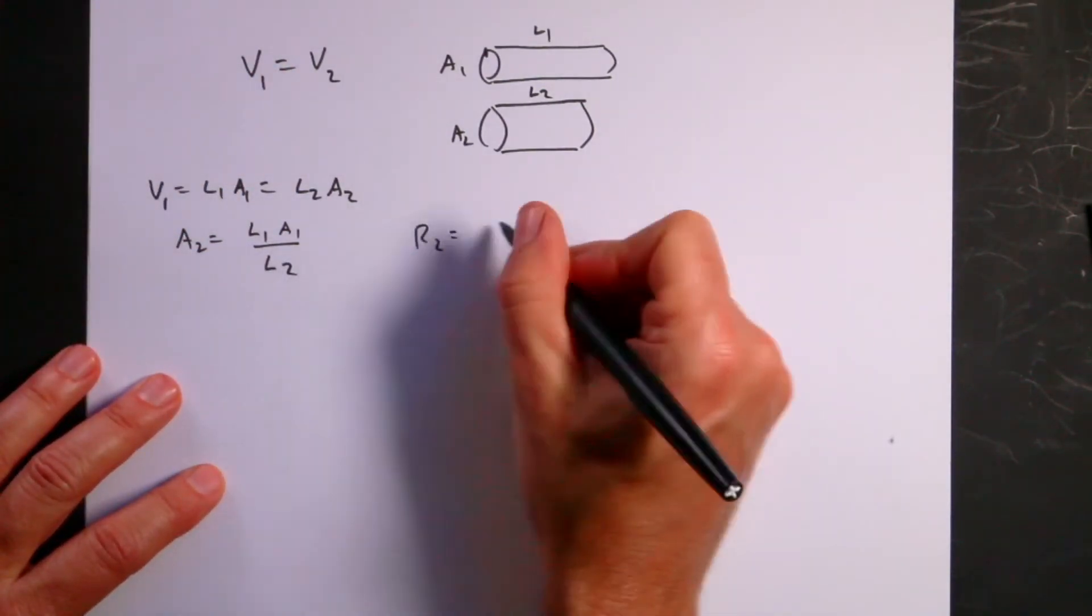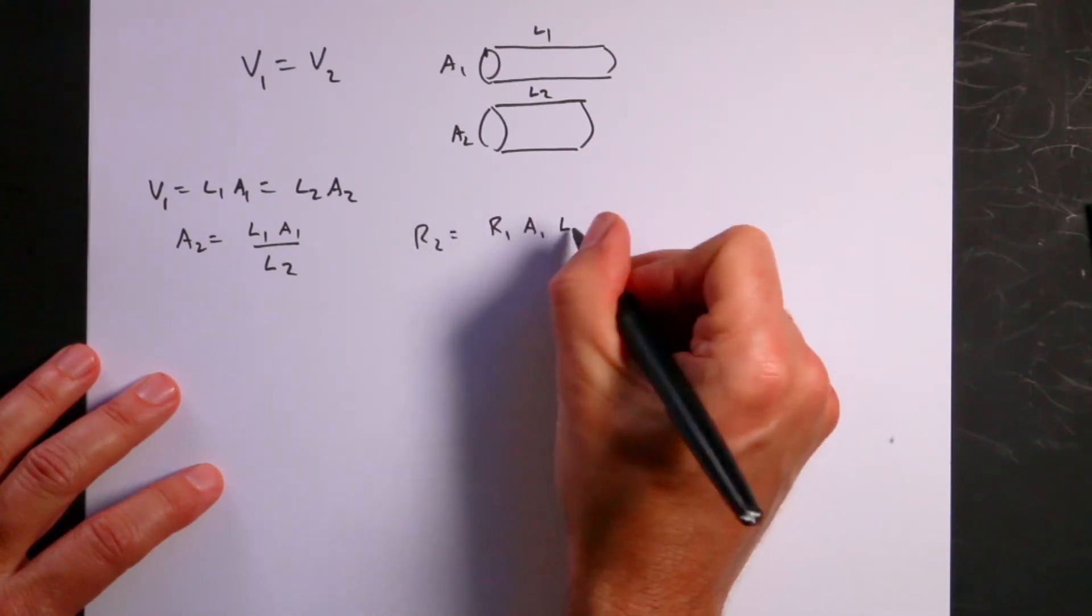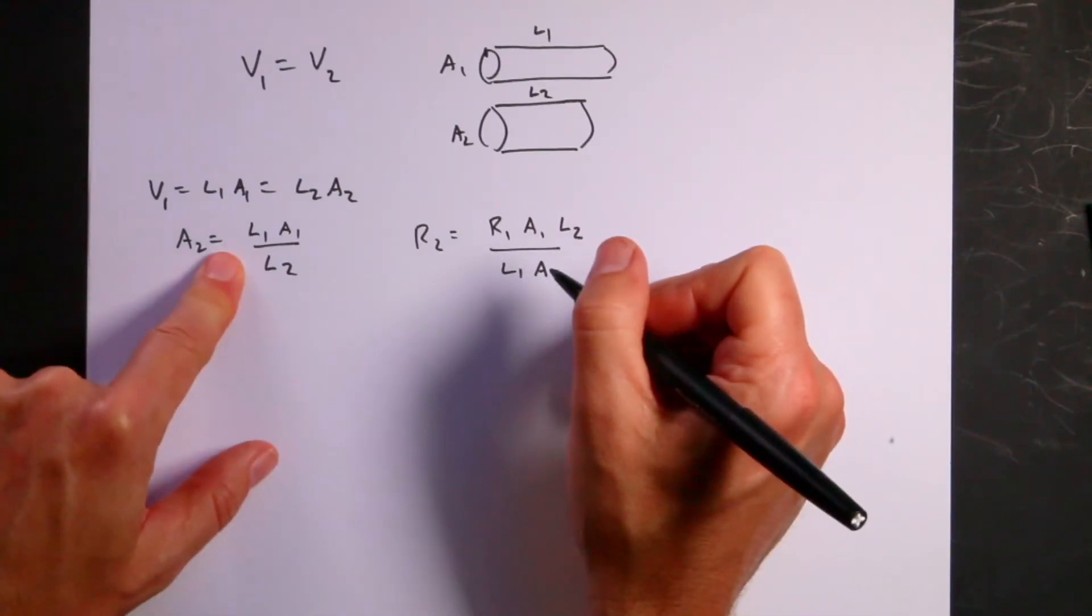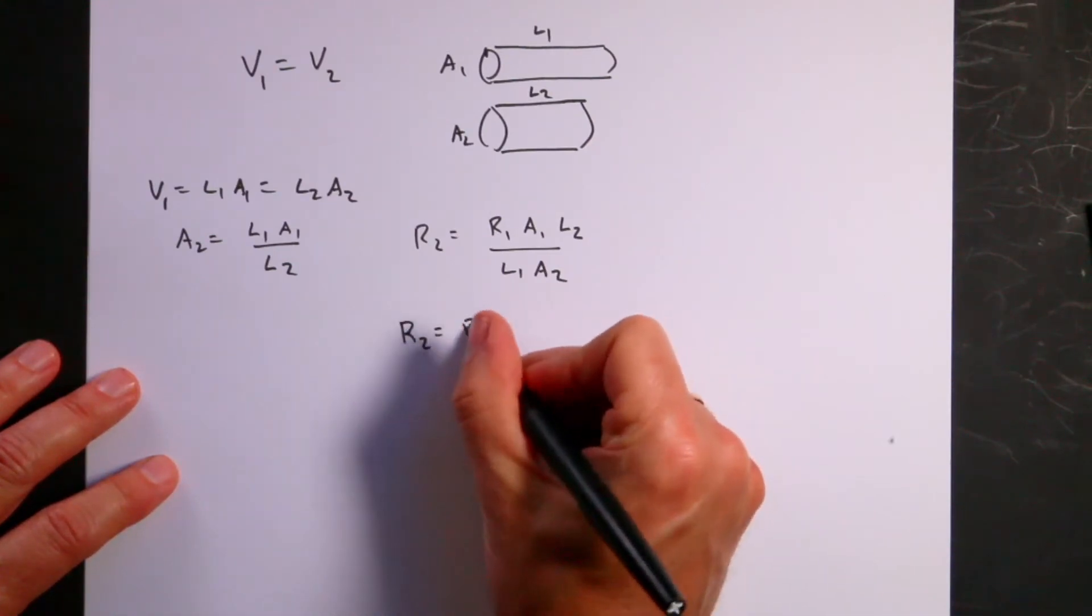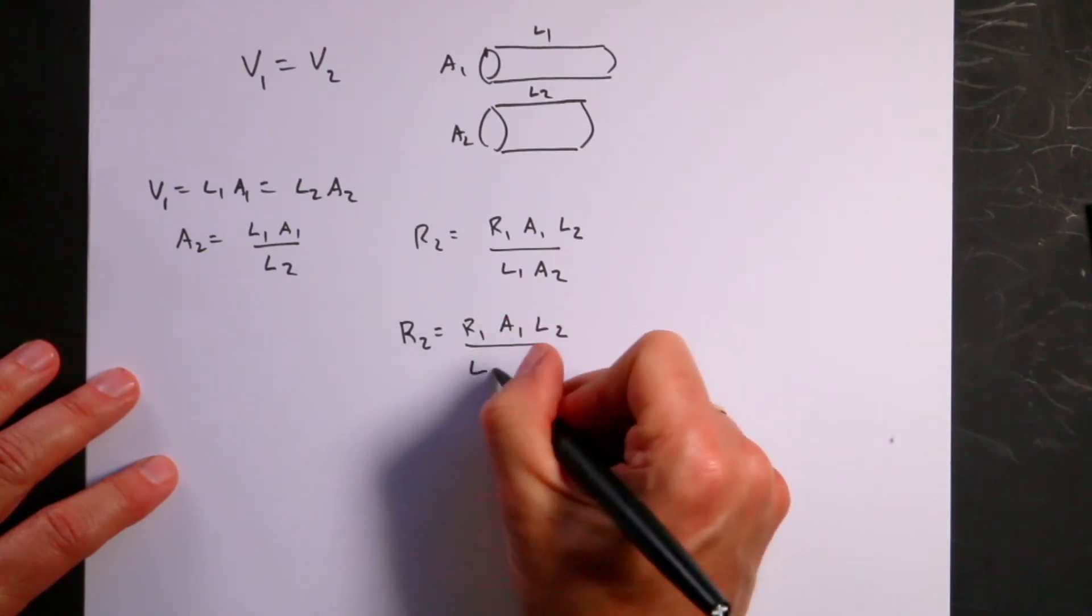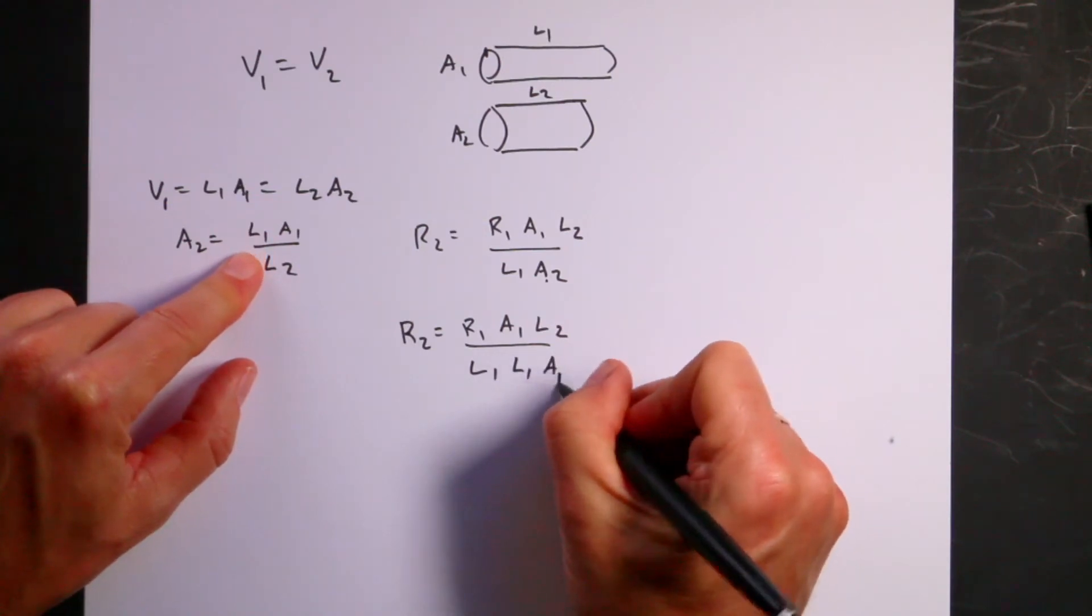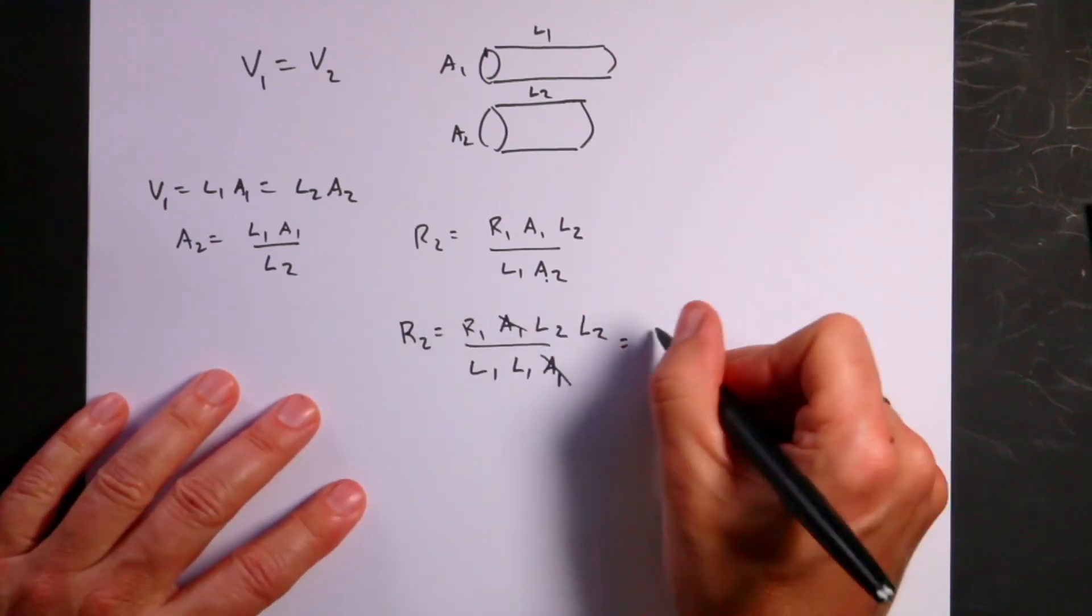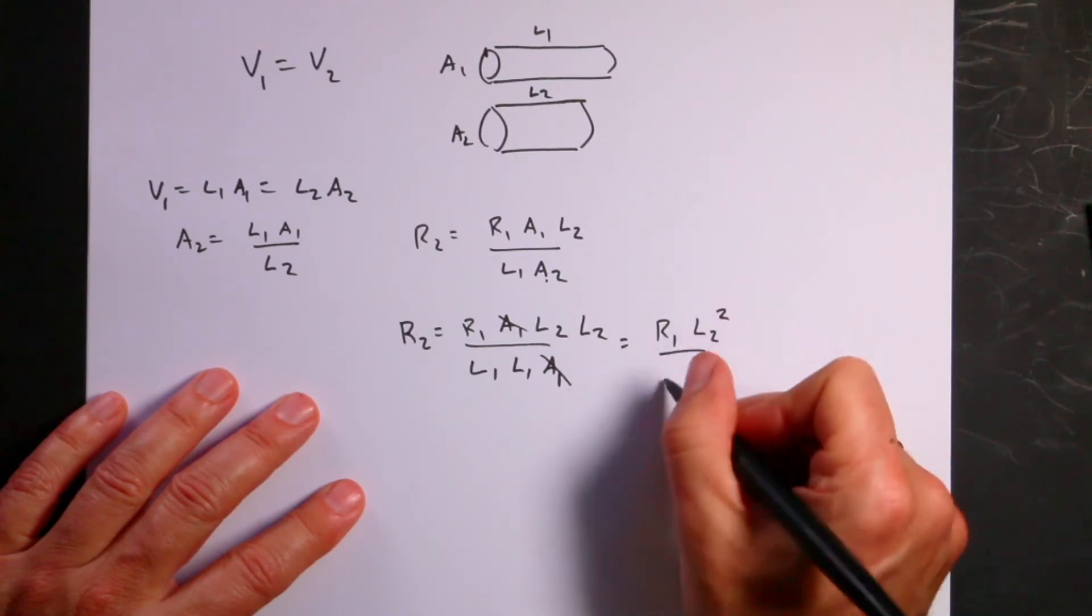Now I can plug that into my equation. So I had R2 equals R1 A1 L2 over L1 A2. Now I'm going to plug in this for A2. So I get R2 equals R1 A1 L2 over L1. And then for A2 I'm going to put L1 A1 divided by L2. So these cancel. I get R1 times L2 squared over L1 squared.